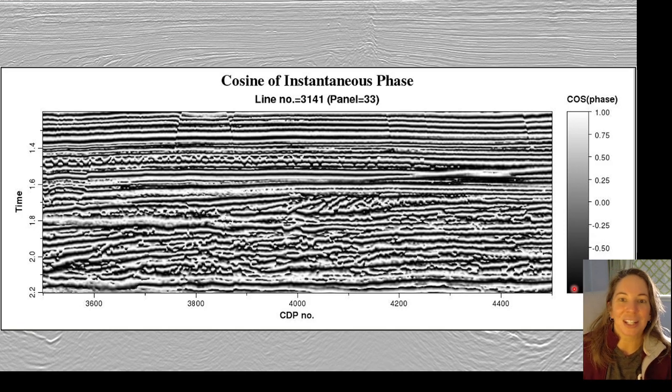Okay, cosine of instantaneous phase is a seismic attribute that we use a lot in my research group because it normalizes the seismic trace while also preserving the polarity information. And so it's no longer cyclical. That means we can use it as an input into machine learning, because we don't have that phase wrapping anymore.